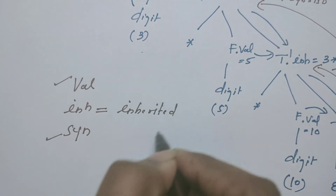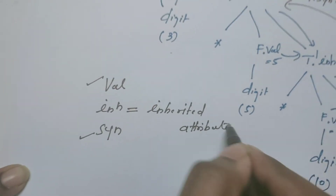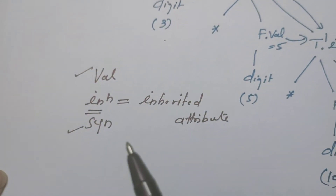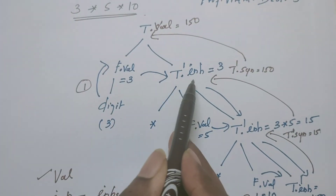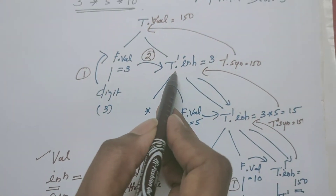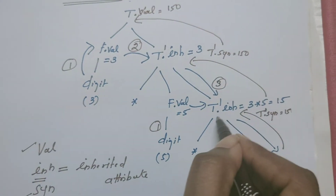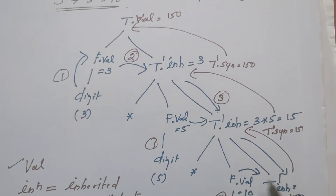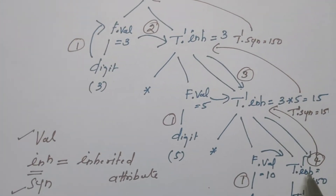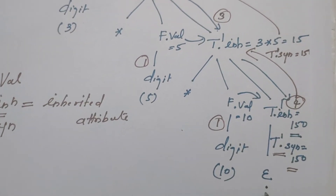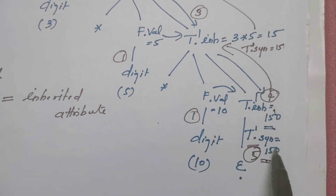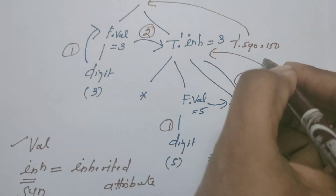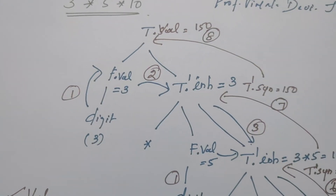An attribute is called inherited if it is accessing the value either from the parent node or from its sibling. Let me number the order of evaluation. The first semantic action is when F gets its value. From here, the value is passed to its sibling. Then the value is passed to the child node. The attribute value is calculated from the parent node and its sibling. This is the fourth action. Then T' is replaced by epsilon — no further growth of the parse tree. The same value generated is stored, then passed to the parent node, and then to the root node. This is the order of evaluation.